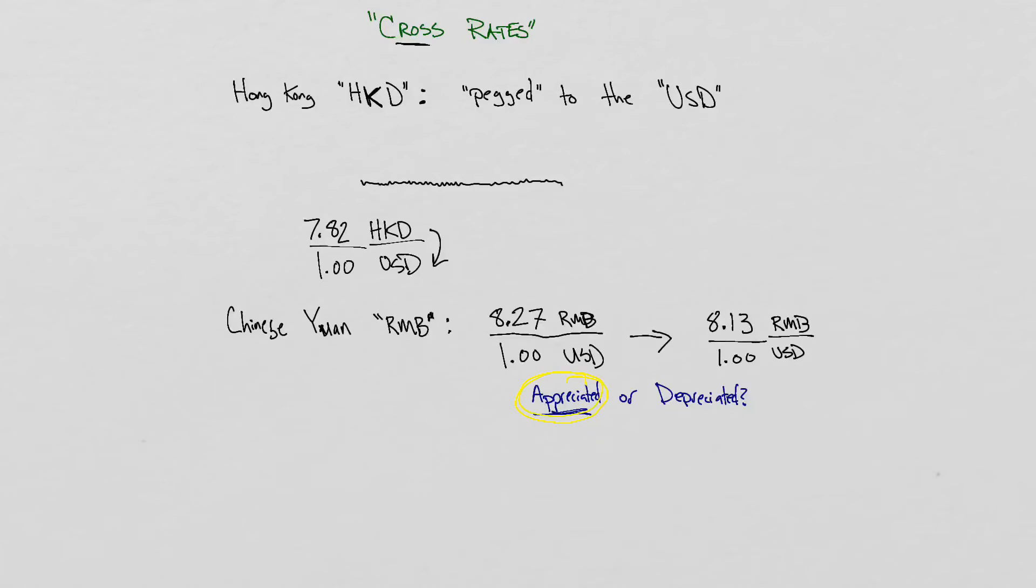So we know the exchange rate between the Hong Kong dollar and the US dollar, and the exchange rate between the RMB, the Chinese yuan, and the US dollar. But then the next question, what if we wanted to know the value of the Hong Kong dollar against the yuan, and specifically after it's changed from 8.27 to 8.13?